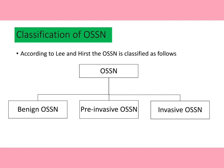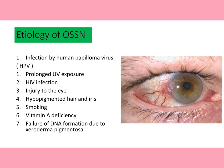Mild lesions involve the basal one-third of the conjunctiva. Those involving the inner two-thirds are classified as moderate. Lesions involving the full thickness of the epithelium are termed severe dysplasia.